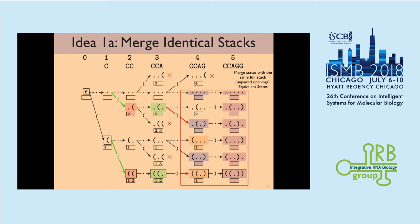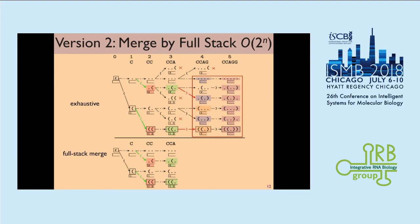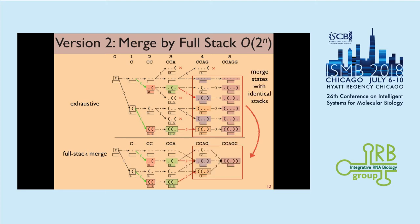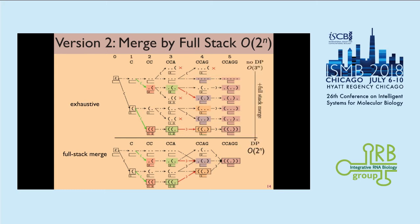After merging states that share the same stack, we merge states with the same color — basically the same stack. Our running time has been reduced, but it's still exponential. Why? Because even after merging states with the same stack, the possible stacks are exponential: for any nucleotide you can choose whether it's in the stack or not. So we need a further speedup.